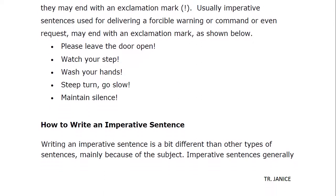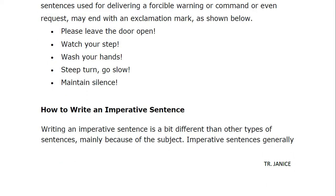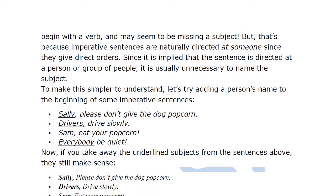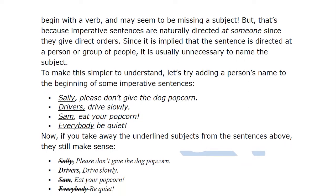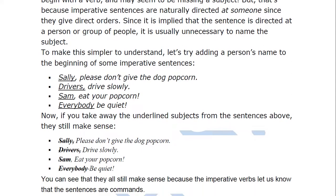Now, how to write an imperative sentence. Writing an imperative sentence is a bit different from other types of sentences, mainly because of the subject. Imperative sentences generally begin with a verb and may seem to be missing a subject. But that's because imperative sentences are naturally directed at someone since they give direct orders — to a particular person or group. It is usually unnecessary to name the subject.